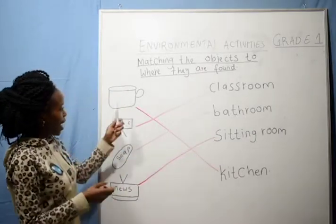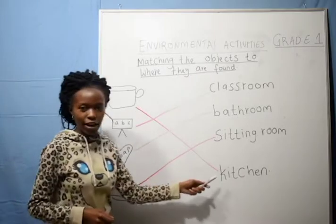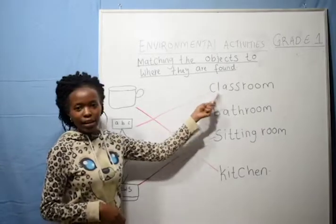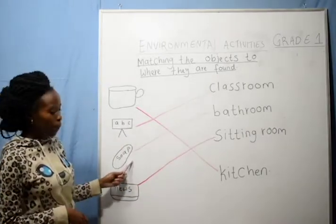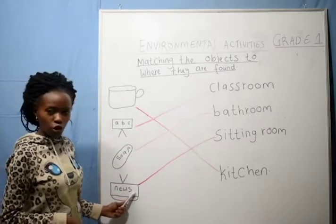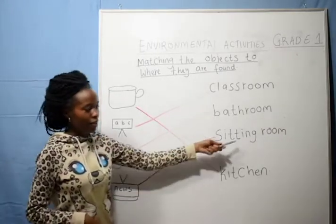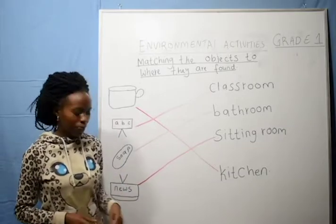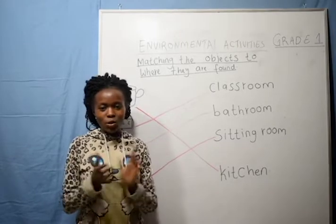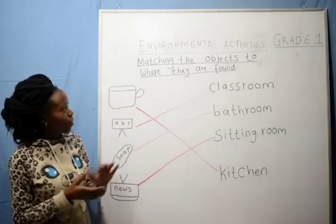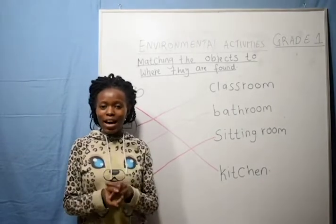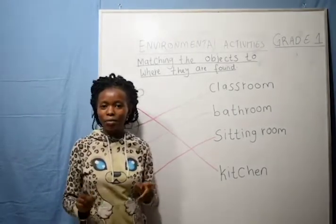So we have said that a cup is found in the kitchen, a blackboard is found in the classroom, soap is found in the bathroom, and a television is found in the sitting room. Are we together? Yeah. Thumbs up. Well done. So that marks the end of our environmental activity lesson. See you next time. Have a very wonderful time. Bye bye.